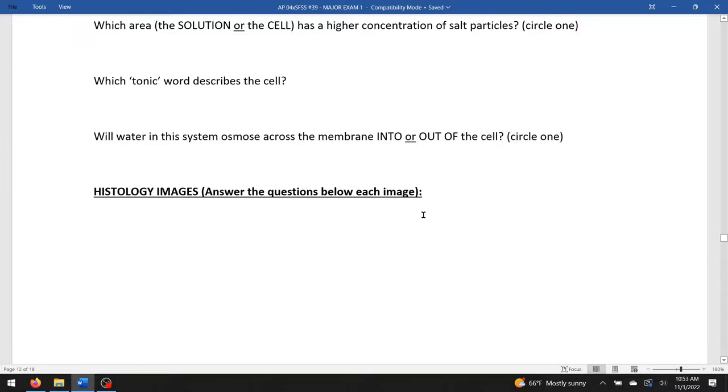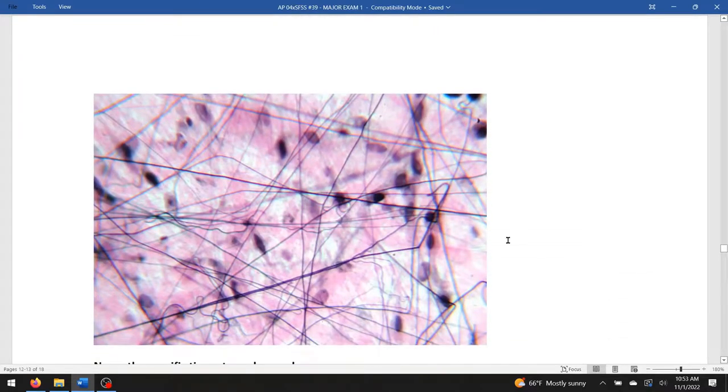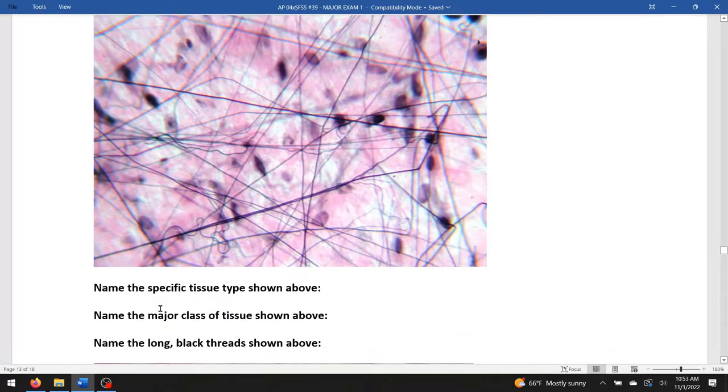There's that threadbare blanket or threadbare coat that's been torn. And we can see the fibers. Name the specific tissue type. That's areolar tissue or very loose connective tissue. Name the major type of tissue. That's a type of connective tissue. Name the long black threads. Those are elastic fibers.